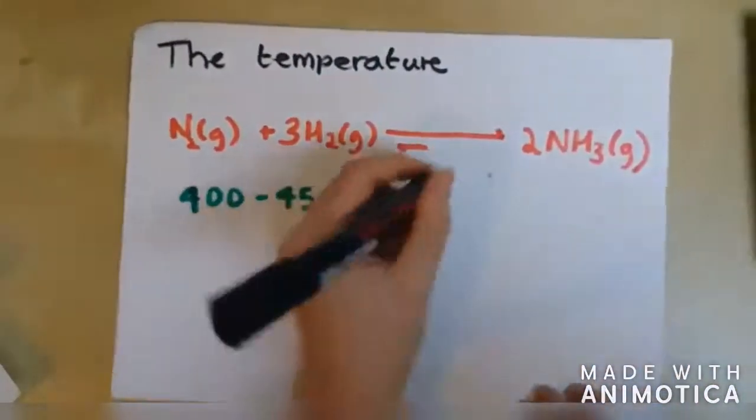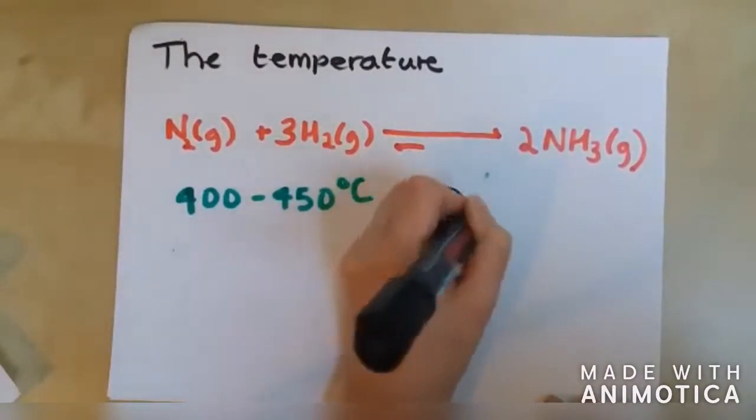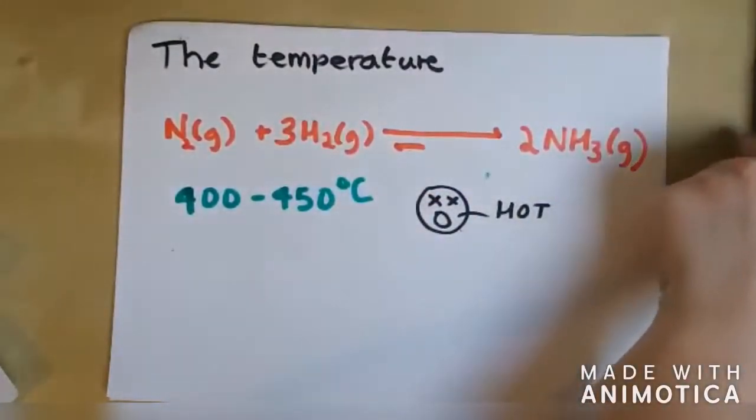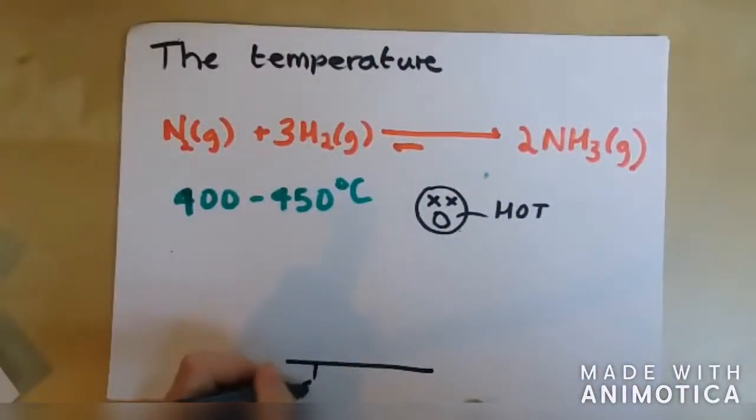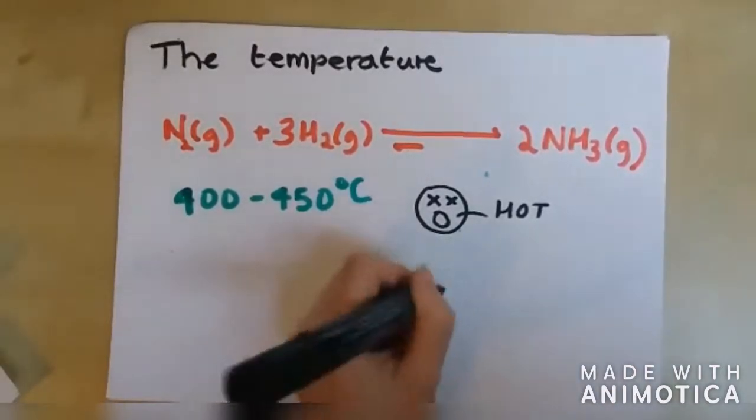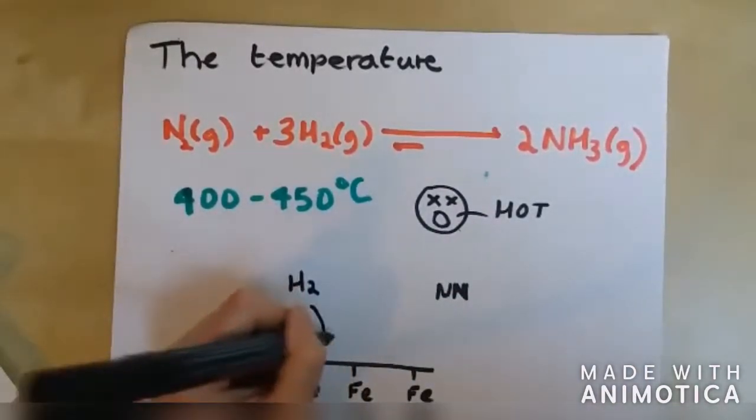However, 400 to 450 degrees C is not a low temperature. The lower the temperature, the slower the reaction. Industries need the gases to reach equilibrium within the short time that they will be in contact with the catalyst.